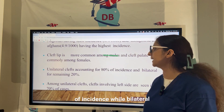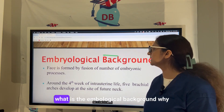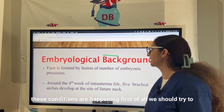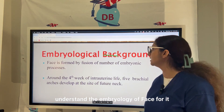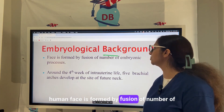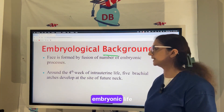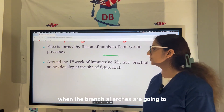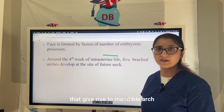Unilateral clefts account for about 80 percent of incidence, while bilateral is around 30 percent. To understand the embryological background, we need to understand the embryology of the face. The human face is formed by the fusion of a number of embryological processes. Around the fourth week of embryonic life, when the branchial arches develop, it is the first arch that gives rise to the mandibular arch.